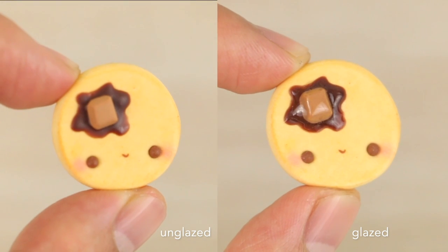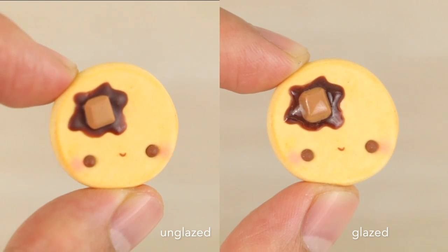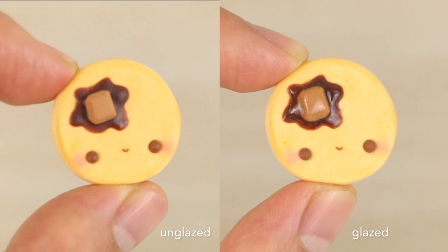And then once all the sauces have cooled down completely, you'll see that they have a matte finish to them. You can leave them as is or you can paint on some gloss glaze to make things nice and shiny.